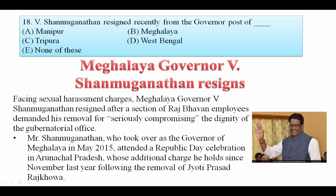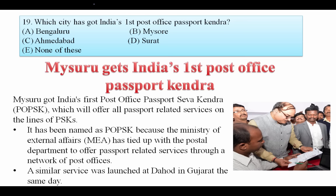V. Shanmuganathan resigned recently from the governor post of which state? Recently, because of sexual harassment charges, one of the governors of a northeast state resigned from his position. V. Shanmuganathan was the governor of Meghalaya. Your answer is B — Meghalaya. Governor V. Shanmuganathan resigned because of facing sexual harassment charges.